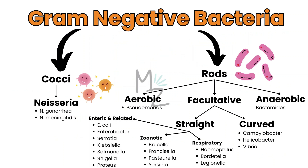Gram-negative rods include aerobic, for example Pseudomonas; anaerobic, like Bacteroides; and facultative. Facultative are further subdivided into curved — that includes Campylobacter, Helicobacter, and Vibrio — and also into straight, which is further subdivided into enteric and related, that includes E. coli, Hemophilus, Bordetella Pertussis — the topic of today's video — and Legionella.